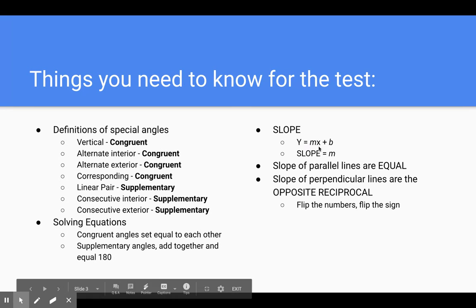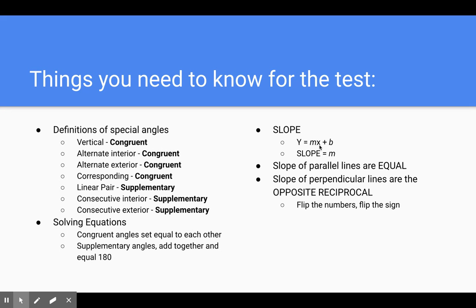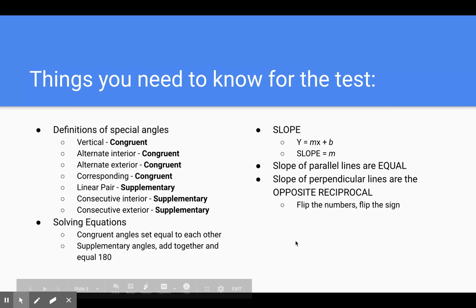For slope, always remember y equals mx plus b, where m is the slope and b is the y-intercept. Slope of parallel lines are equal — they're identical, exactly the same. Slope of perpendicular lines are the opposite reciprocal. Opposite reciprocal means that we flip the numbers and flip the sign — if one's positive, the other has to be negative, and you flip the numbers in the fraction.